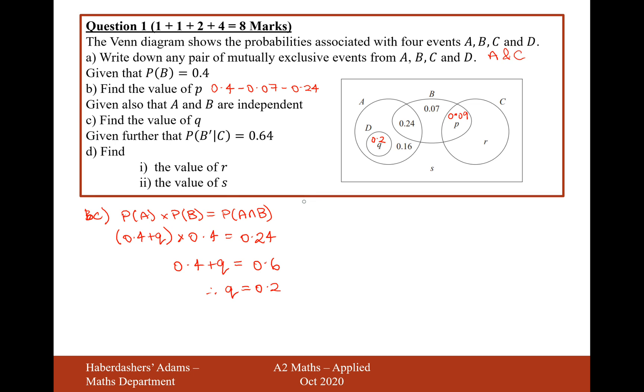Moving on to part D. Given further that the probability of not B, given that C is true, is equal to 0.64, find the values of R and the value of S. So the probability of not B, given C, let's bring out the formula for that.